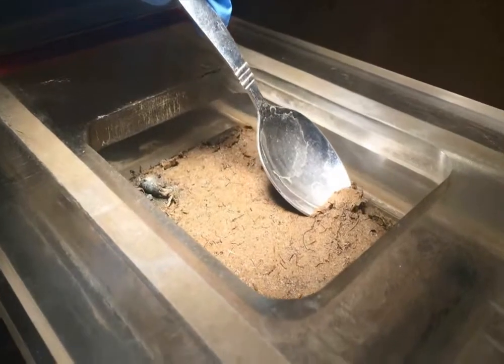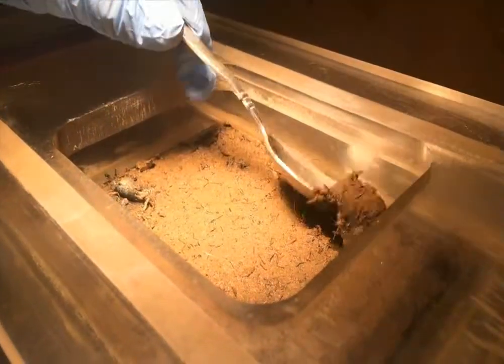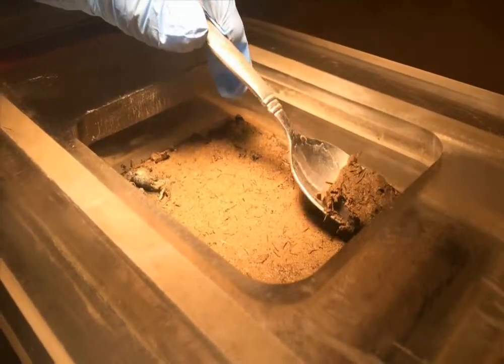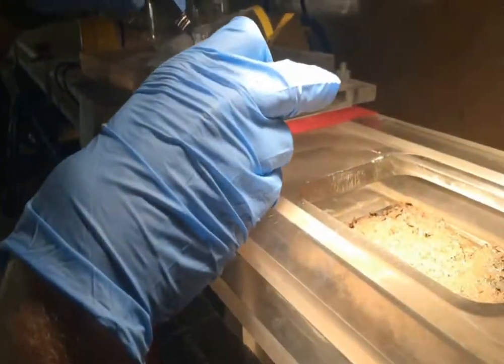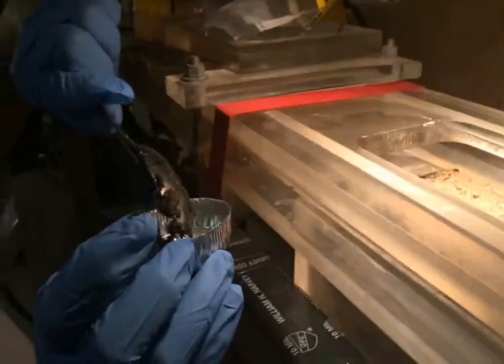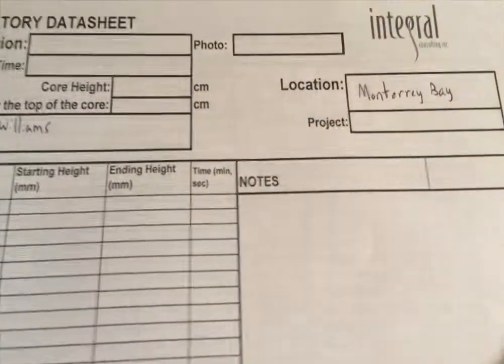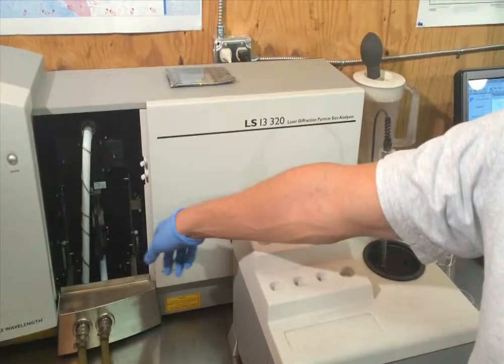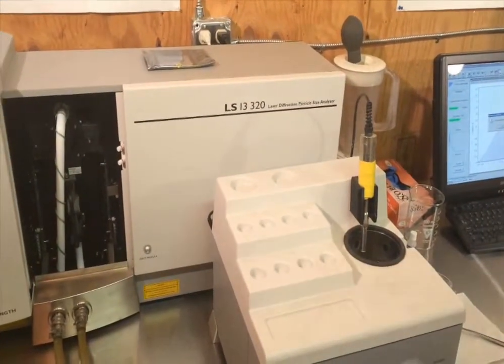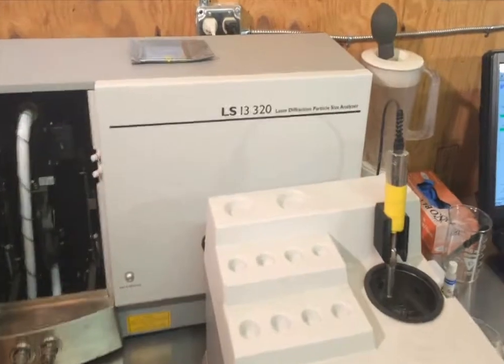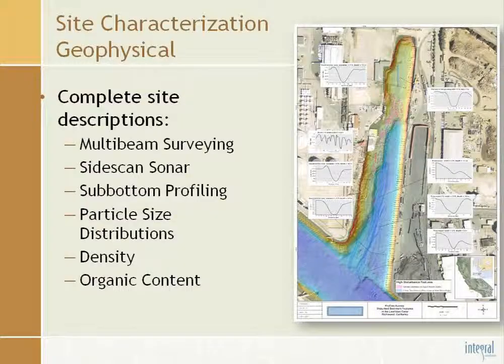An undisturbed sediment core is inserted into the flume so that its surface is level with the flume. The flume allows for sediment samples to be taken from the surface of a core and at various depth intervals for the measurement of organic content, water content, bulk density, and particle size. The properties of each sample are carefully documented by skilled analysts, and the laboratory employs state-of-the-art instrumentation, such as a laser diffraction particle sizer for high-resolution quantification of each sample.